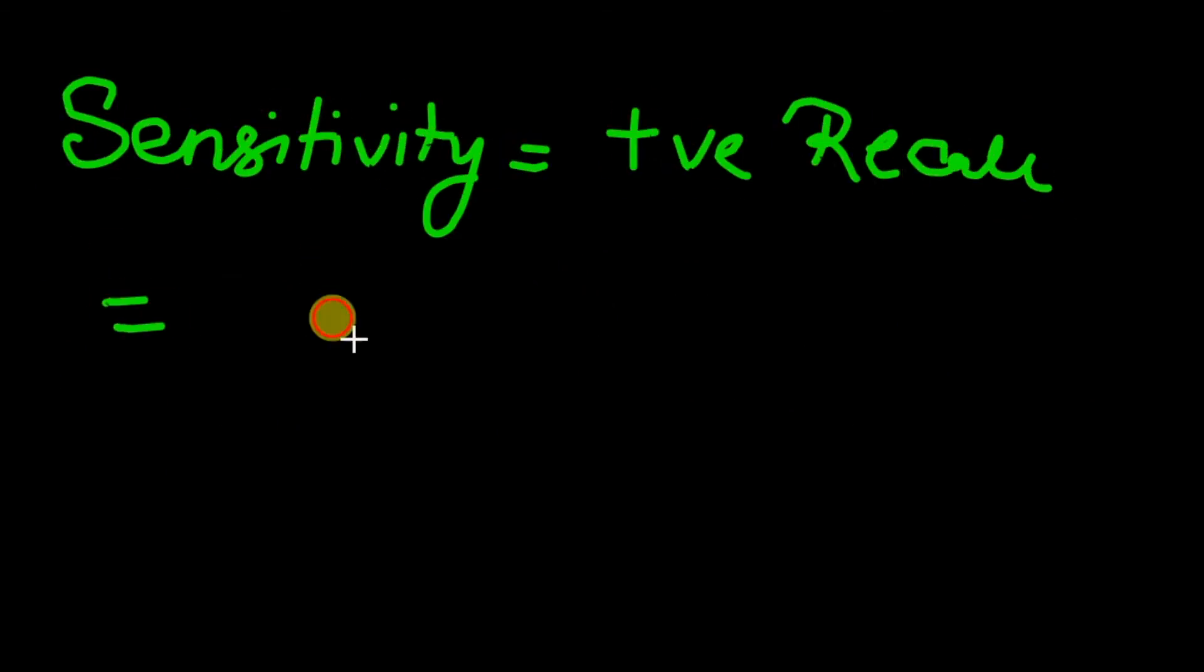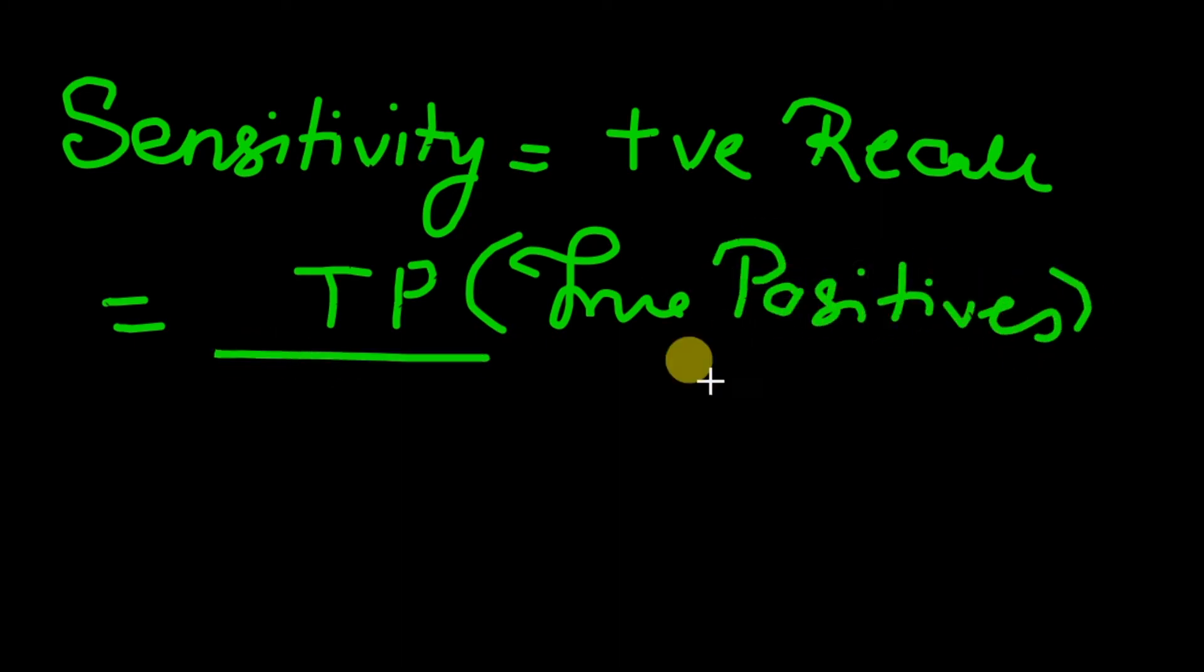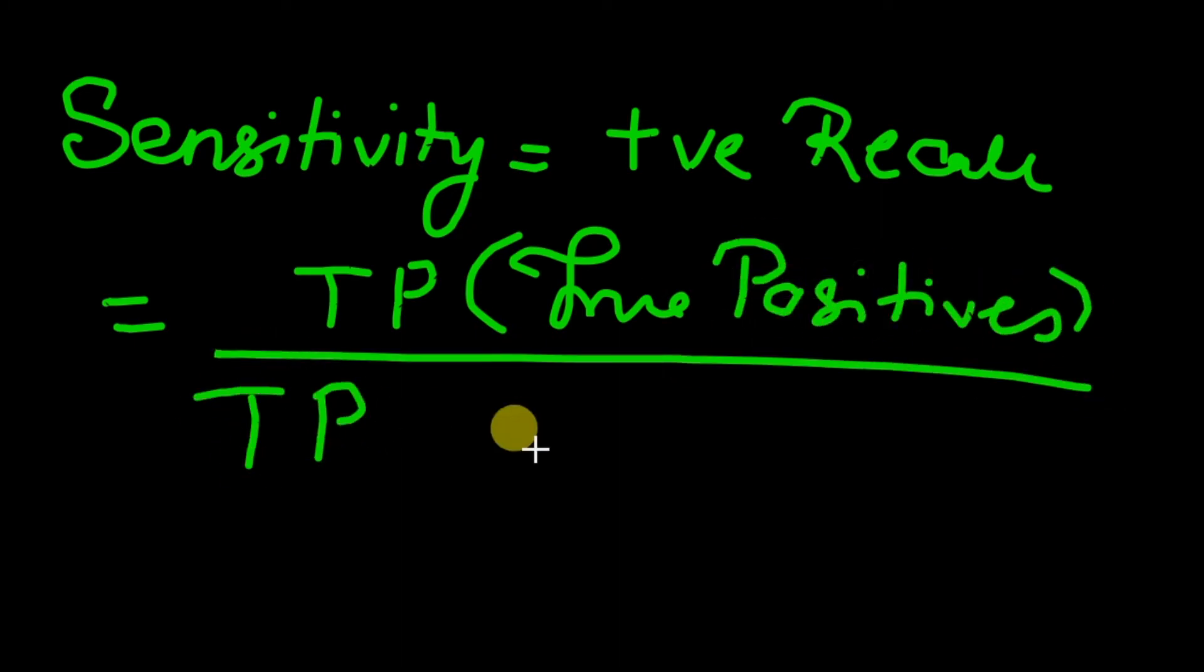Let's look at the formula of sensitivity. Sensitivity is the ratio of true positive upon true positive plus false negative.